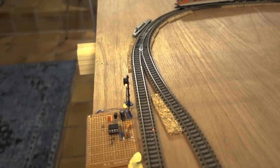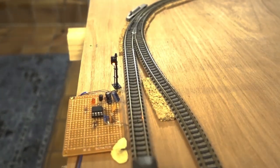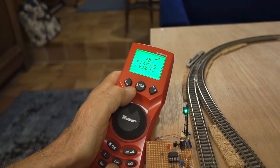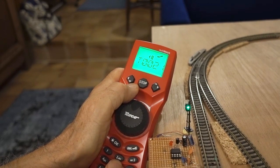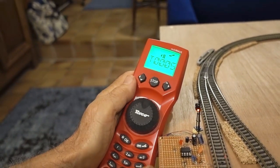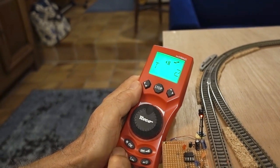For reverse running, the signal doesn't trip. If the next point is set against the train, then the signal turns to red. Like that. In addition, if I now try to change the signal back to green, it doesn't react.